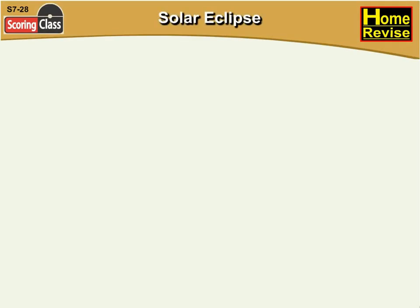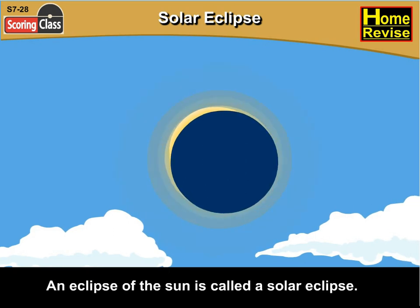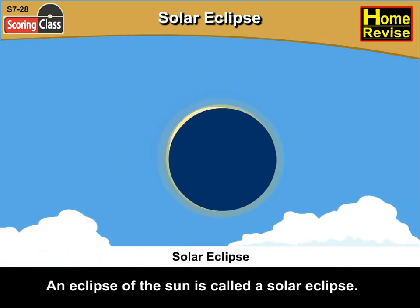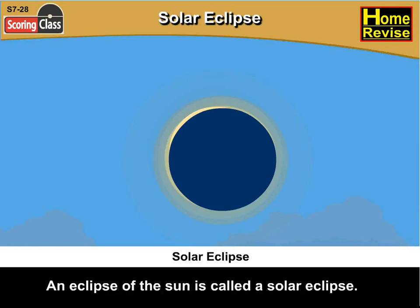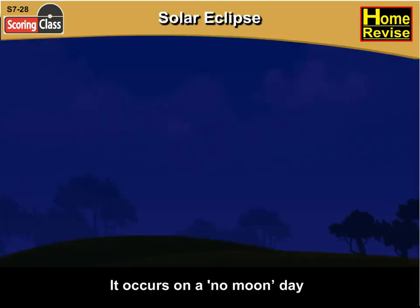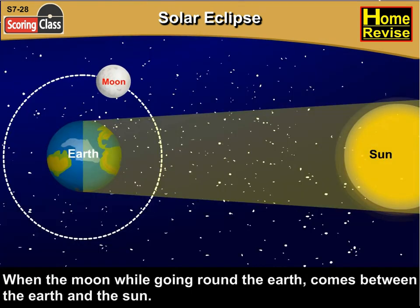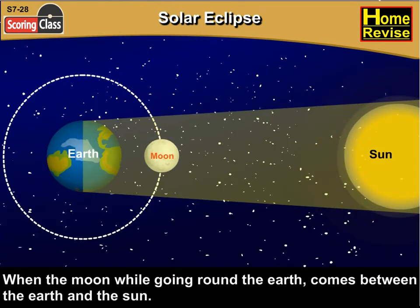Solar Eclipse. An eclipse of the sun is called a solar eclipse. It occurs on a no-moon day, when the moon, while going round the earth, comes between the earth and the sun.